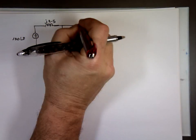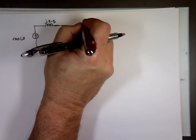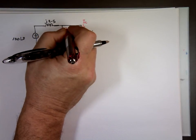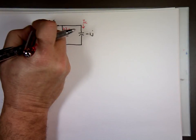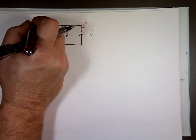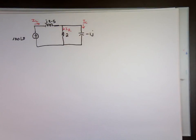And the question is find I sub C, I sub R, and I sub L. And graph them. They want us to graph them too. You can use any method you wanted to solve it. The easiest one probably KCL.